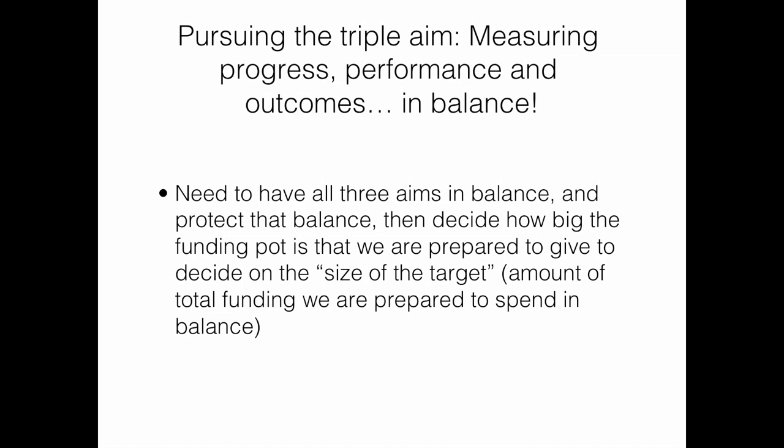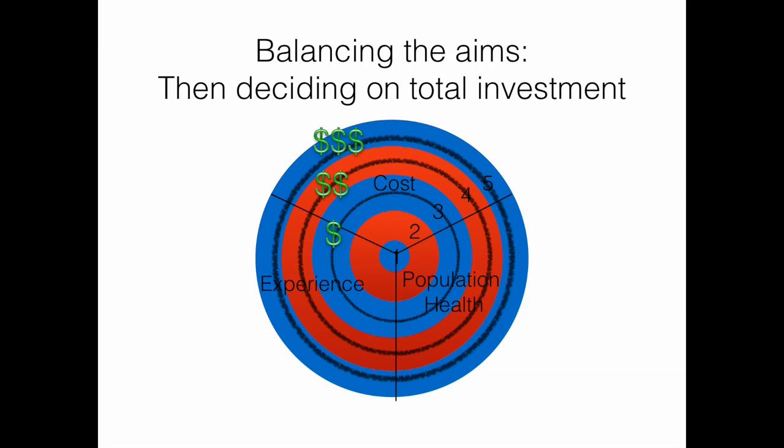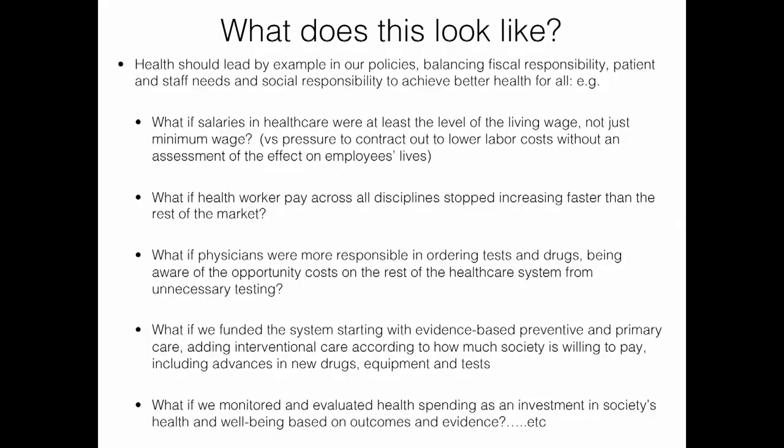We need to have all three aims in balance, protect that balance, and then decide how big an investment we're looking for. Going back to the diagram, each circle represents a larger investment. If you keep the balance — even if the investment is relatively small — and then decide we're not covering enough of population health, cost, or experience, you enlarge the circle and costs go up. But society has to continually discuss how much it's willing to invest in the system overall, and as managers we must keep that investment in balance.